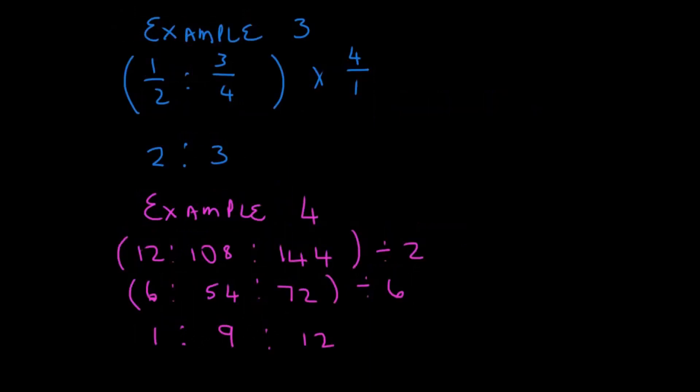Let's look at example 3. We have a half as to 3 quarters. Now, what do we need to do here? We need to multiply out by our LCM. Why? Because we want to convert our fractions to whole numbers.